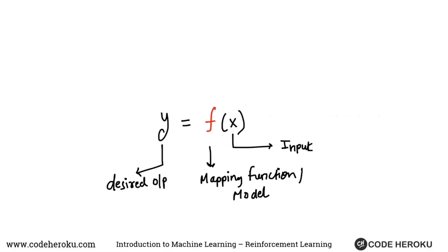This is what we have seen in our machine learning class until now. The whole purpose of machine learning is you are given a set of inputs, let's say X, and you are also given a set of desired output. Your job as a machine learning engineer is to come up with this mapping function F, which maps all your inputs to outputs.